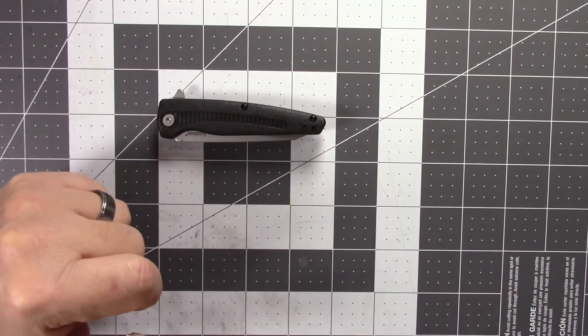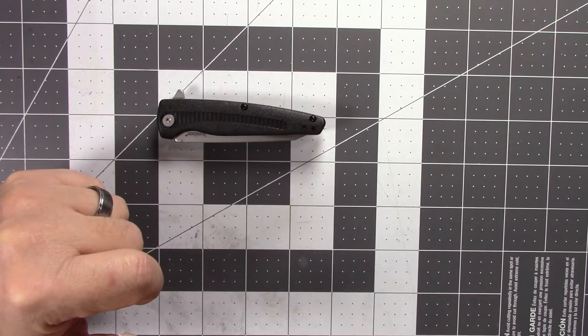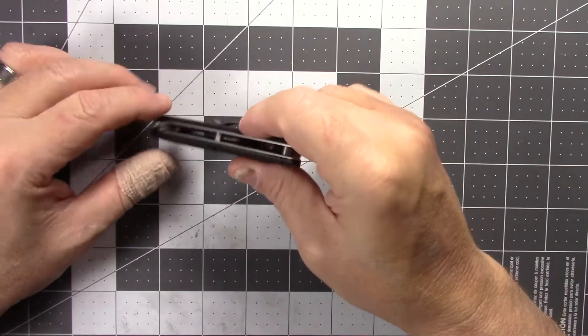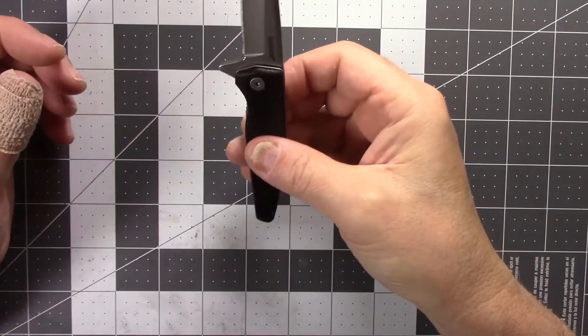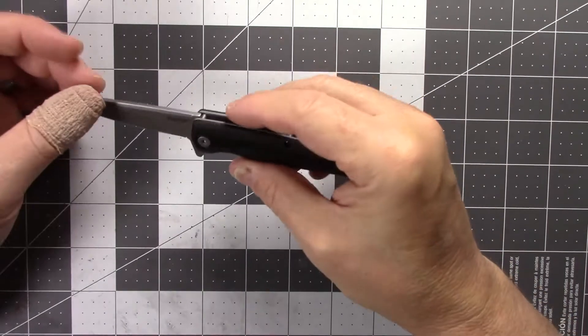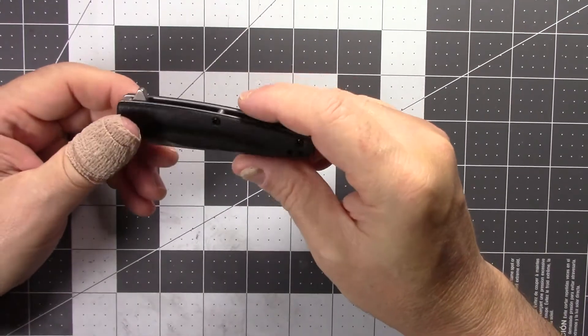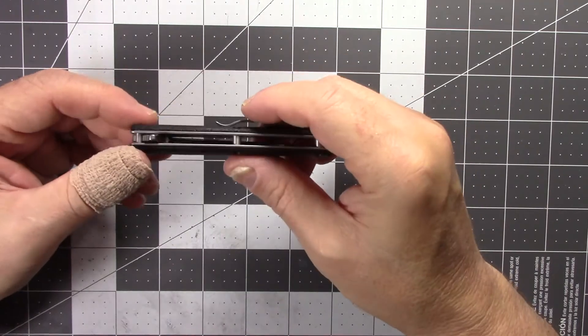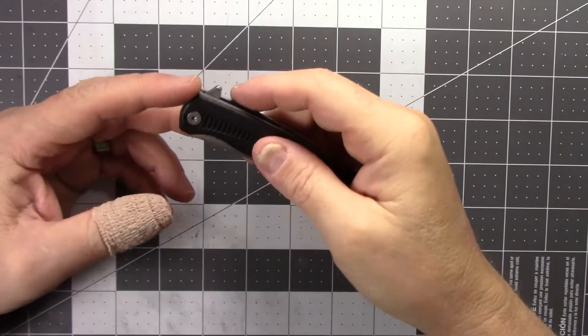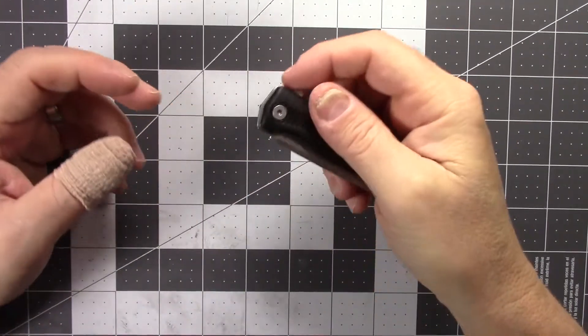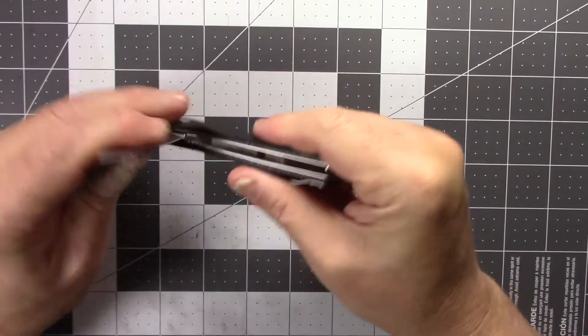But what got my attention was the price tag on that. It was $11 and some change, which I don't really expect much for $11, but I thought it looked pretty good. So I asked the guy if he'd take it out of the case and let me have a look at it. And I thought, well, it don't look too bad. I was expecting it to look similar to maybe some of the Ozark Trail stuff they have or even Gerber, which Gerber makes some Walmart knives that seem to underperform. They'll look nice in the case, but when you get them, they're usually not that great.